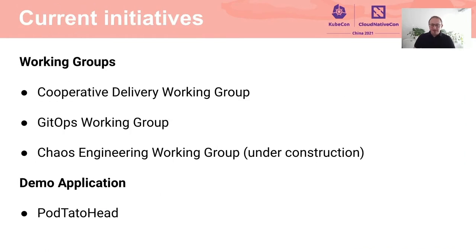The operator white paper was achieved by a working group, and the main purpose of that group was to define what an operator is. Currently, three working groups with the goal of bringing light on special topics exist in the TAG App Delivery. Additionally, there is one project, the Potato Head, which is maintained by members of the TAG. We will dive a bit deeper into the working groups, so I will hand over to Josh and Robert, who will tell you more about the cooperative delivery working group.